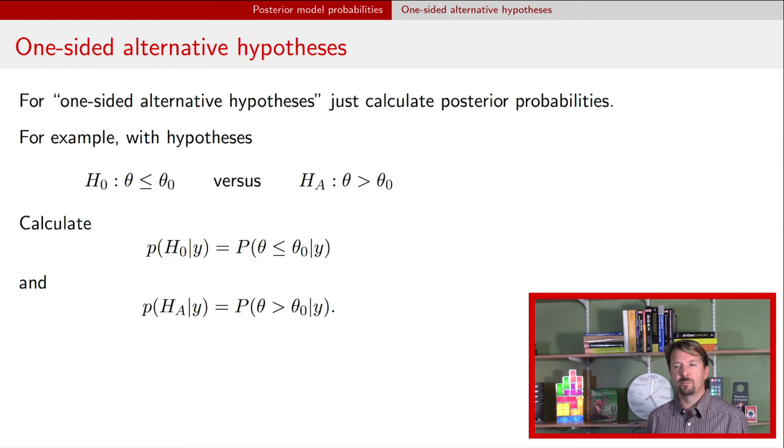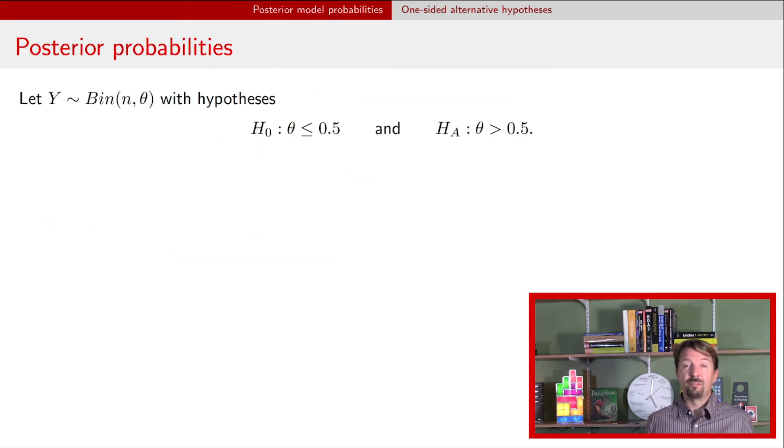Alright, so let's give a particular example here. Let's say we have a binomial model and we have a null hypothesis that says the probability of success parameter theta is less than or equal to 0.5 and the alternative says it's greater than 0.5.